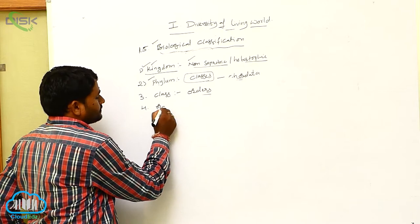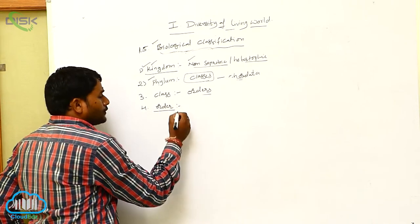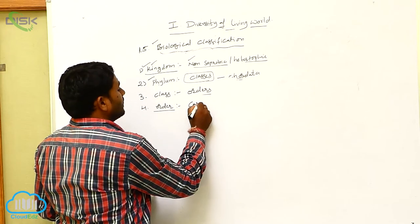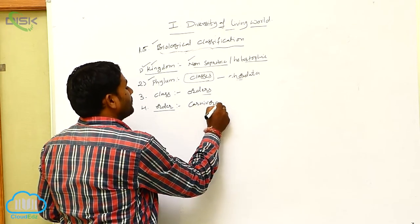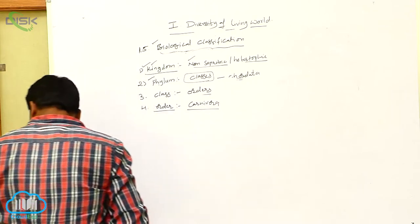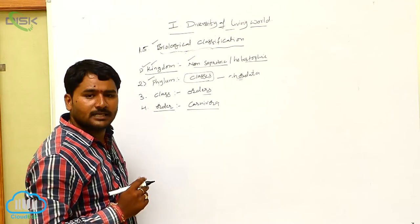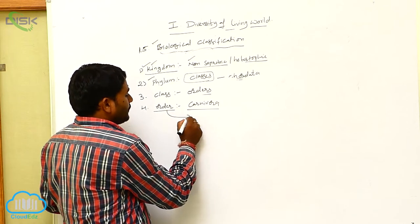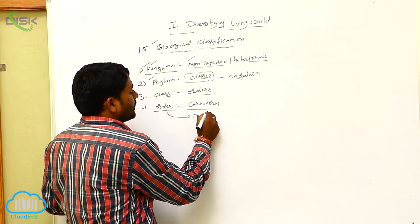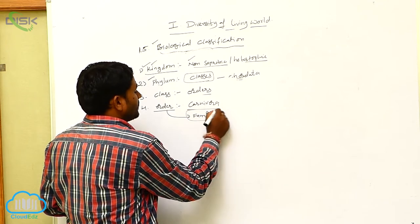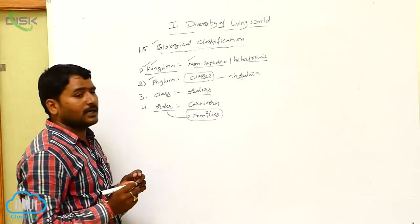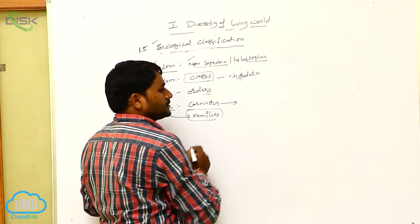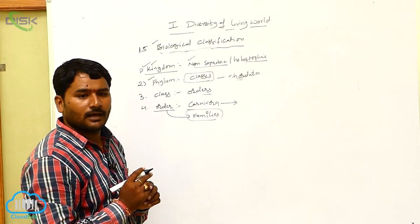Order is a group of one or more families. For example, if you take the Carnivora order — let us look at the Carnivora order.